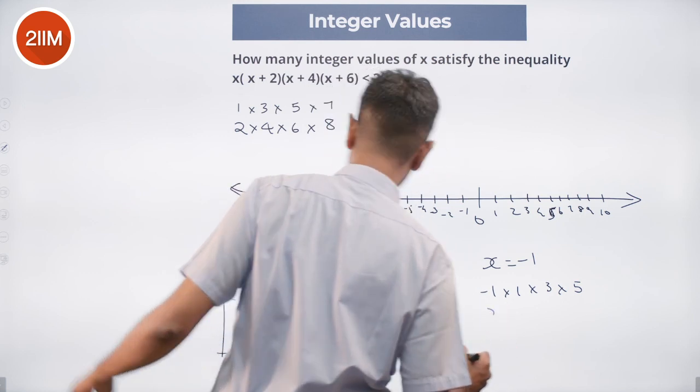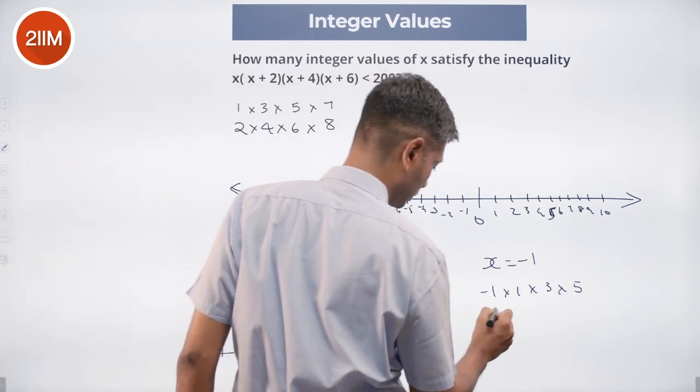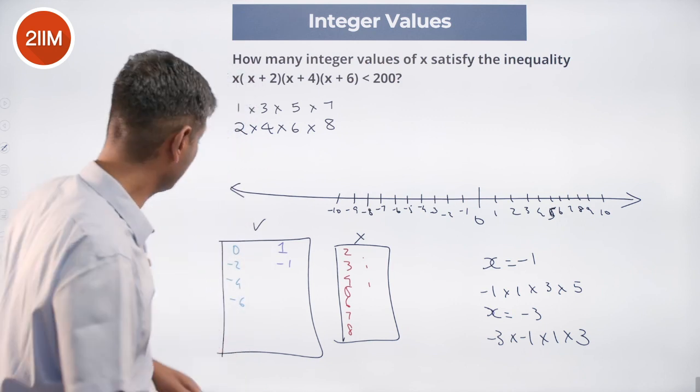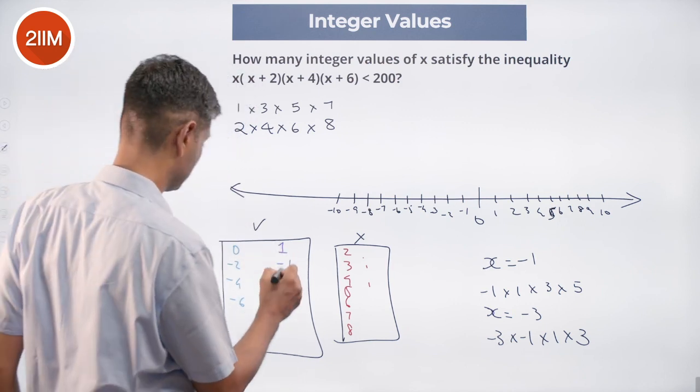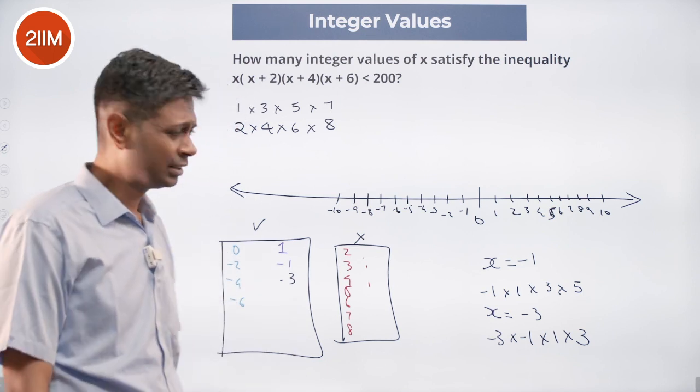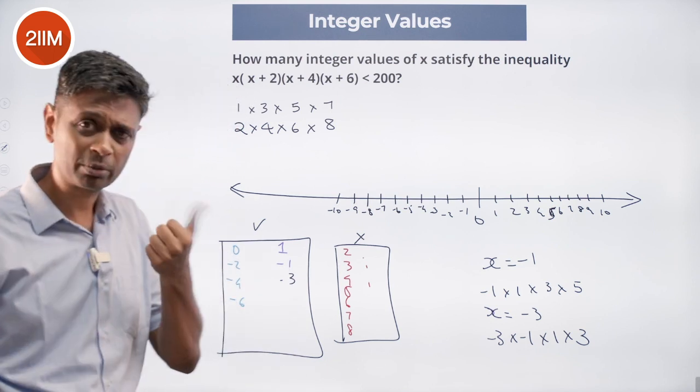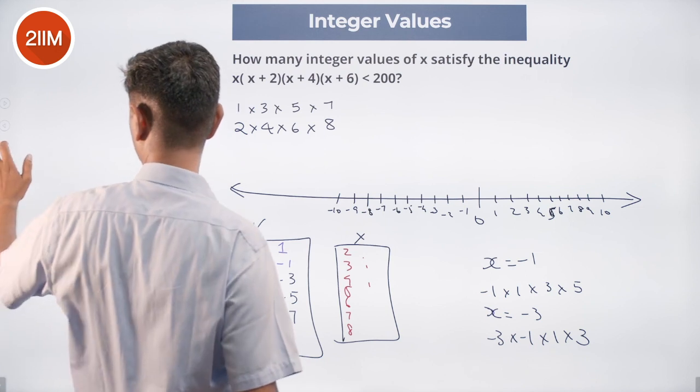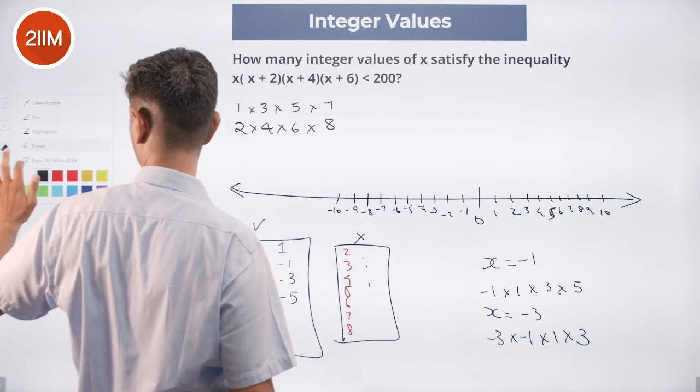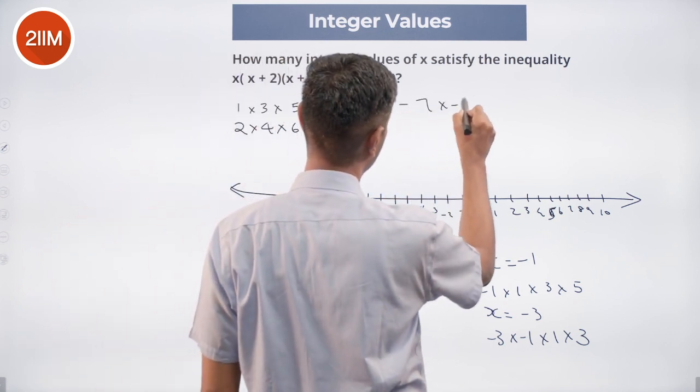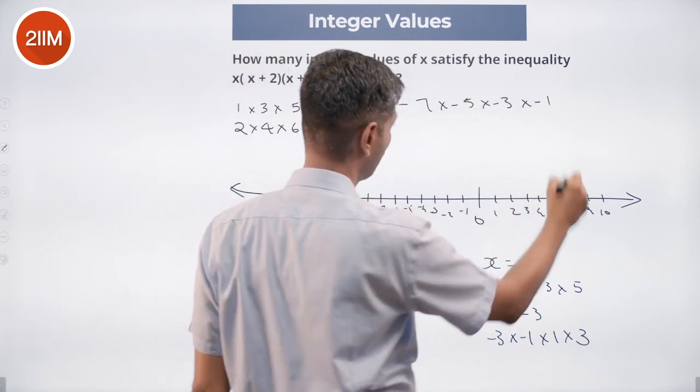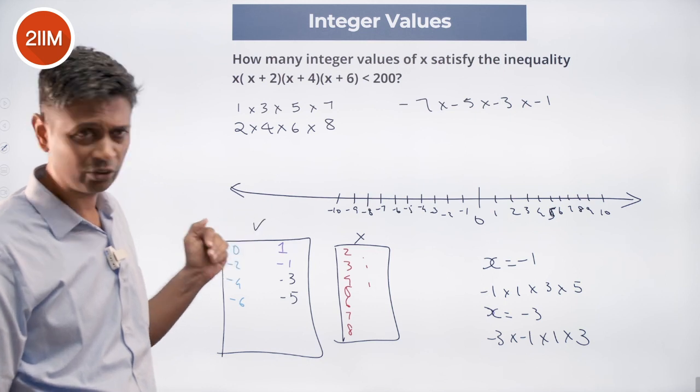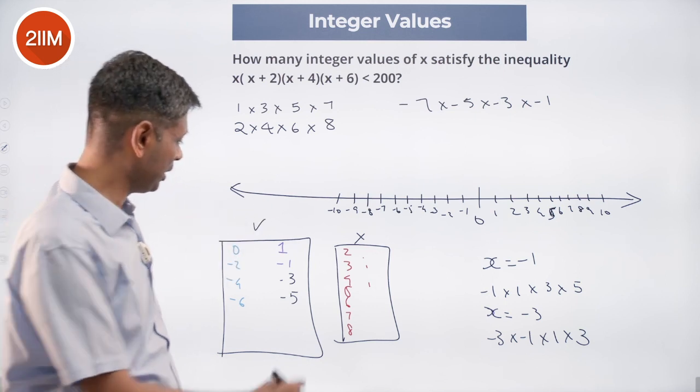I put minus 3, x equal to minus 3. Minus 3 into minus 1 into 1 into 3 is 3 into 3, 9. Yeah, that works. Lovely. So minus 3 works. I am thinking minus 5 will also work. Minus 5, minus 3, minus 1, plus 1. Yeah, minus 5 works. See, see minus 7, will that work. I am going to put minus 7. I should check whether it works. Minus 7 into minus 5 into minus 3 into minus 1, which is 1 into 3 into 5 into 7, positive, 105. Minus 7 works.